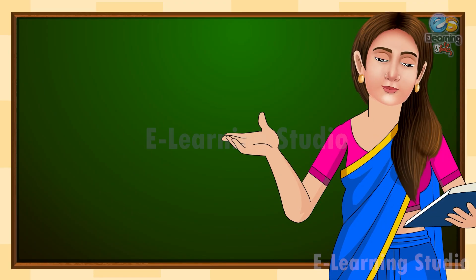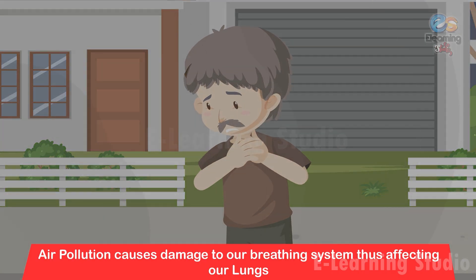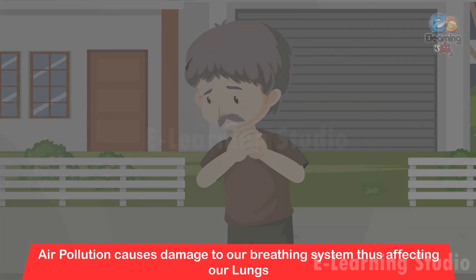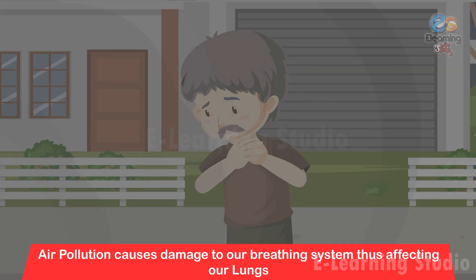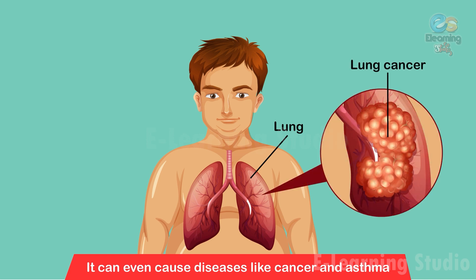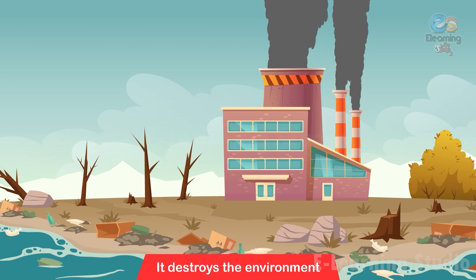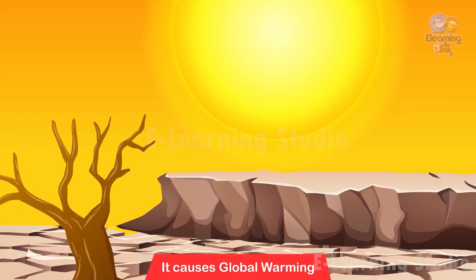Children, let us know about some effects of air pollution. 1. Air pollution causes damage to our breathing system, thus affecting our lungs. 2. It can even cause diseases like cancer and asthma. 3. It destroys the environment. 4. It causes global warming.